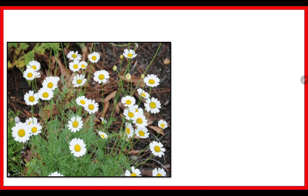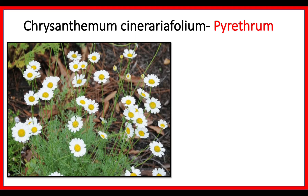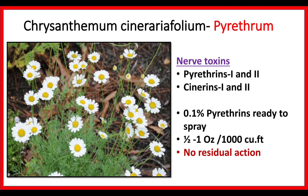Do you know about this plant? If your guess is Chrysanthemum cinerariaefolium, then you are right. It is the plant from which we extract Pyrethrum, the natural insecticide. It basically has pyrethrin 1, pyrethrin 2, and cinerin 1 and 2 — these are the active components and active principles. It is actually a neurotoxin to insects. 0.1% pyrethrin is ready to spray, and it is to be noted that there is no residual action in pyrethrin. Thereby, we combine pyrethrin with DDT.